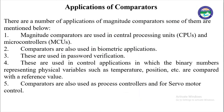Now, we will see the applications of comparators. There are a number of applications of magnitude comparators. These are used in central processing units and microcontrollers. These comparators are also used in biometric applications and in password verification. They are mainly used in control applications in which binary numbers representing physical variables such as temperature, position, etc., are compared with reference values. These comparators are also used in controllers and for servo motor controllers.